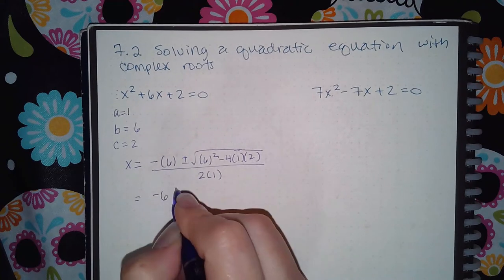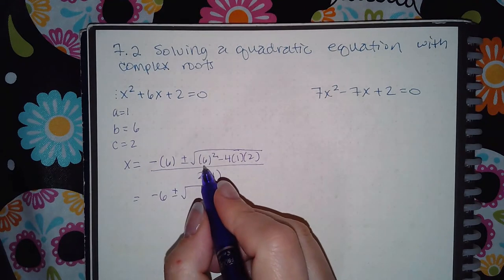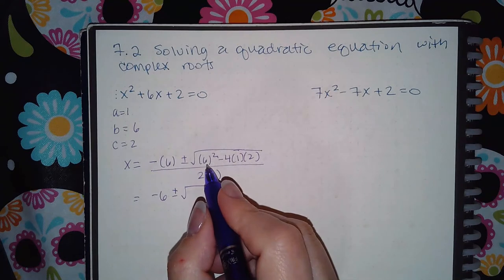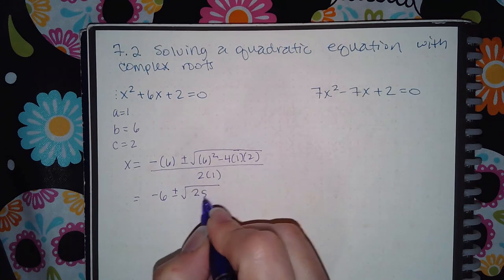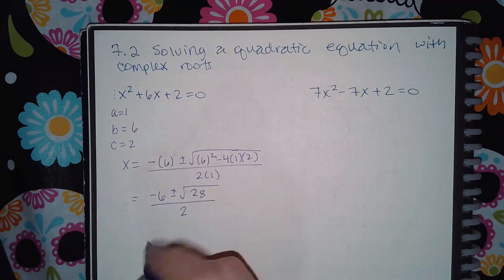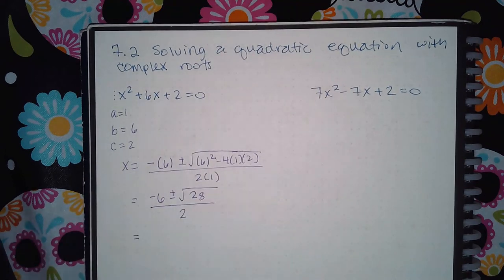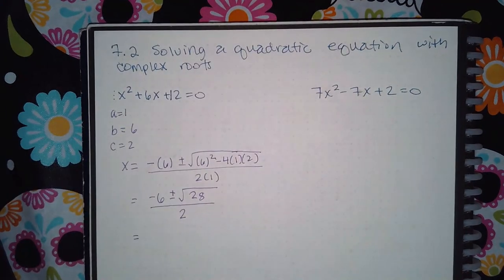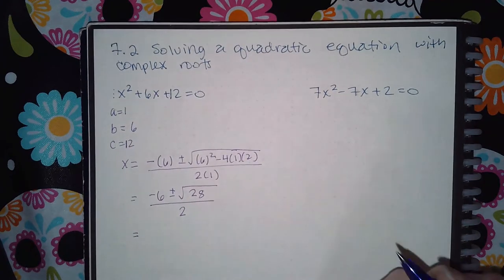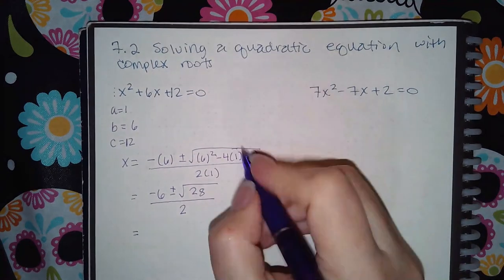So then we get negative 6 plus or minus and then in here we get 28, and so then we get 2. This one is not complex. I think I know what the problem is. I think when I wrote down the problem I wrote it down incorrectly. I think that should be 12. So then c would be a positive 12 which means this would be a positive 12.